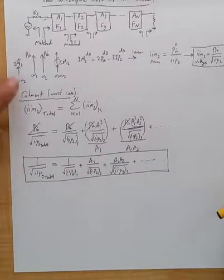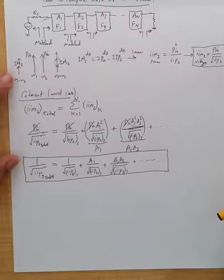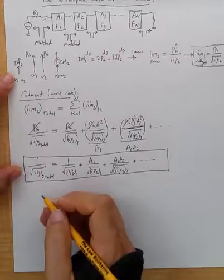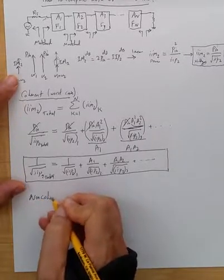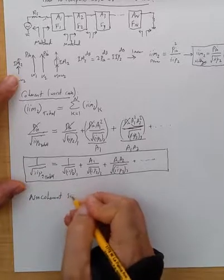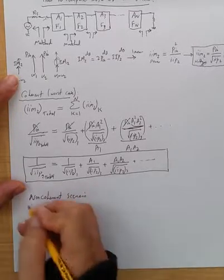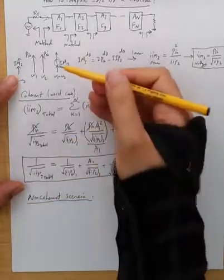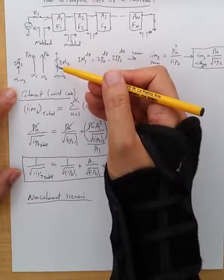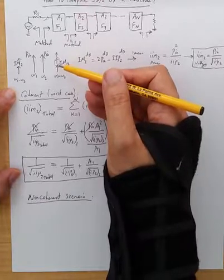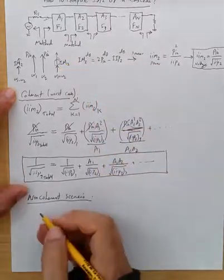Of course, you can come up with a non-coherent scenario, in which you're assuming that these generated components from different stages have random phases, so they don't add up coherently, the power adds up. In that scenario, which is not the worst case scenario, what we get is, we need to say,